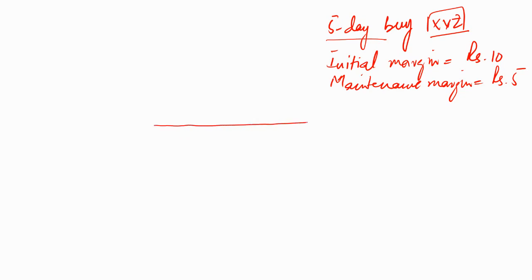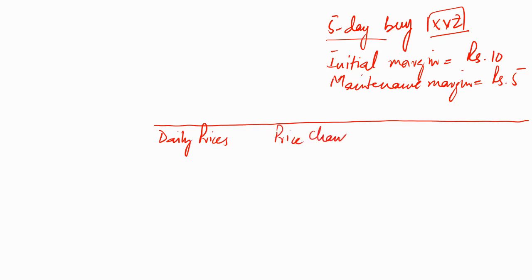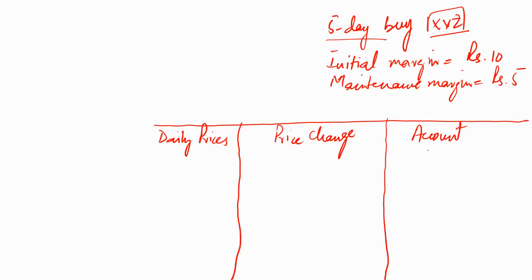We can create a table with the daily prices in the left column, price change in the second column, and margin account adjustments in the third column. Currently the margin account is at 10 rupees because the initial margin requirement is 10 rupees, and this amount must not fall below 5 rupees. Let's say the price of this contract today is 15 rupees, denoted as F0.